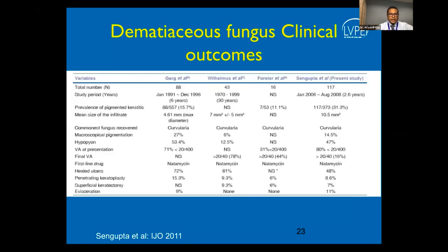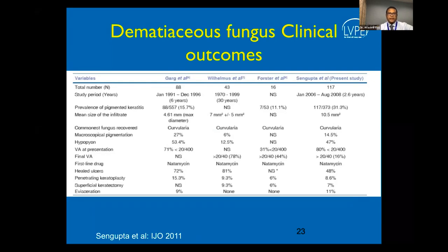The commonest fungus recovered among Dematiaceous types is Curvularia, and the first-line treatment for these infections is Natamycin. Usually they heal well with fairly reasonable good visual recovery. A few percentage of patients are referred for penetrating keratoplasty or may have a poor outcome and need evisceration, but by and large they respond well to antifungals.